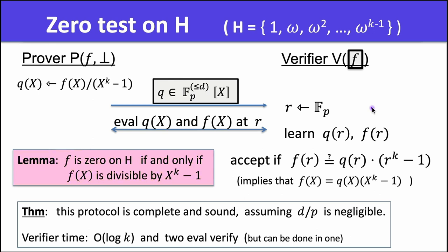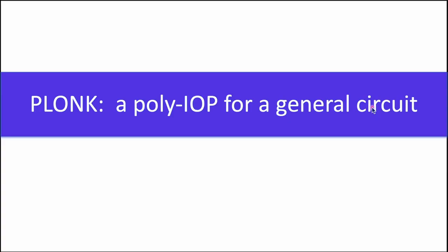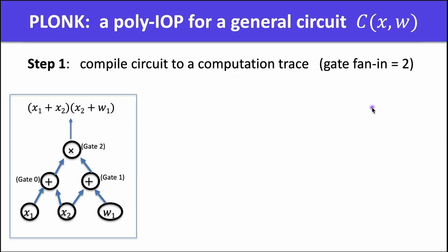The proof size is one commitment to q and two opening proofs (for q and f), which is very short. The verifier only sends one random element to the prover, so we can apply the Fiat-Shamir heuristic to make this non-interactive. The verifier's running time is log k field operations to compute r^k - 1, plus two evaluation verifications. Using batching techniques, we can combine the two openings into a single opening, so the verifier needs to verify just one evaluation opening.